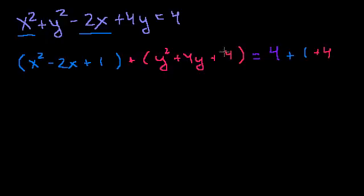And we actually did add just a 4, because there's nothing multiplying the 4 out here. And so this becomes x minus 1 squared plus y plus 2 squared is equal to 4 plus 1 plus 4 is equal to 9.